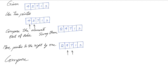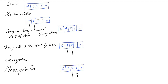Now we move the pointers to the right by one. We compare four and seven — those two elements are already in order, so we don't need to swap them. We just move the pointers to the right by one, now pointing to the third and fourth elements.